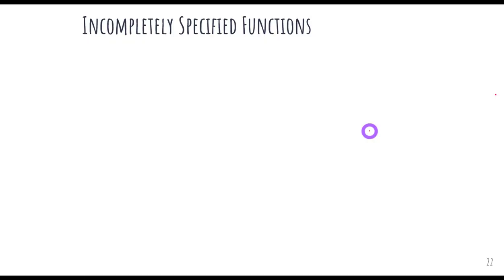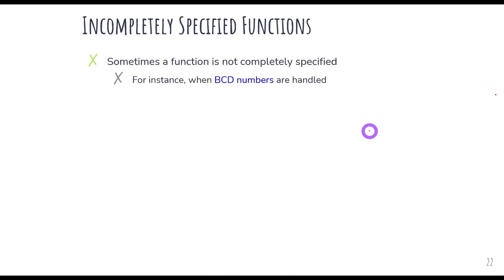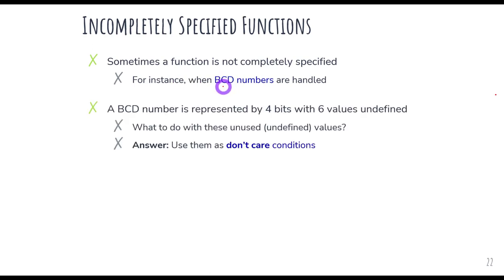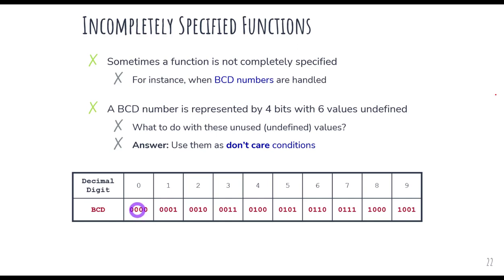Let's take another example from digital logic and design. If you are handling BCD numbers — binary coded decimal numbers — we have a binary code for each of the 10 decimal digits, and we can represent each decimal digit in a four-digit binary code. We can then represent any decimal number in a BCD code.